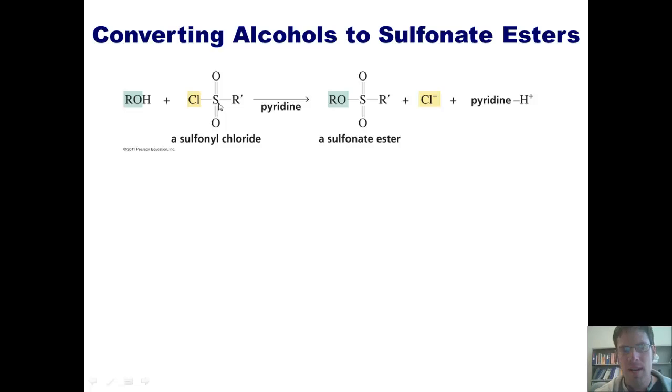If I've got an alcohol and I treat it with a molecule that looks like this - now look at this molecule closely. This is a sulfur double bonded to two oxygens, also single bonded to chlorine, and then some kind of hydrocarbon group. I also add pyridine as a base. It ends up replacing this hydrogen with this sulfur double bonded to the oxygens and single bonded to this alkyl group.